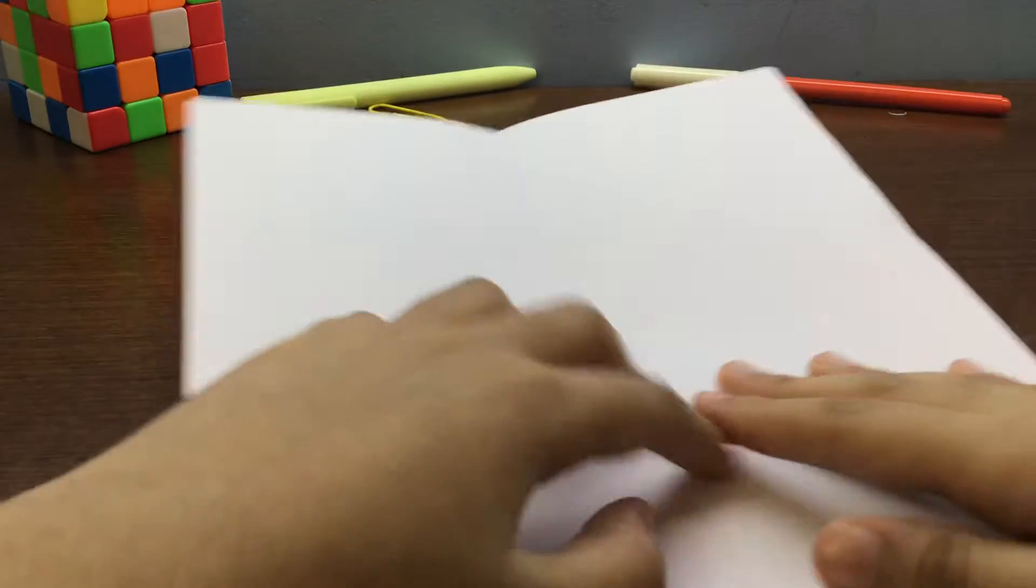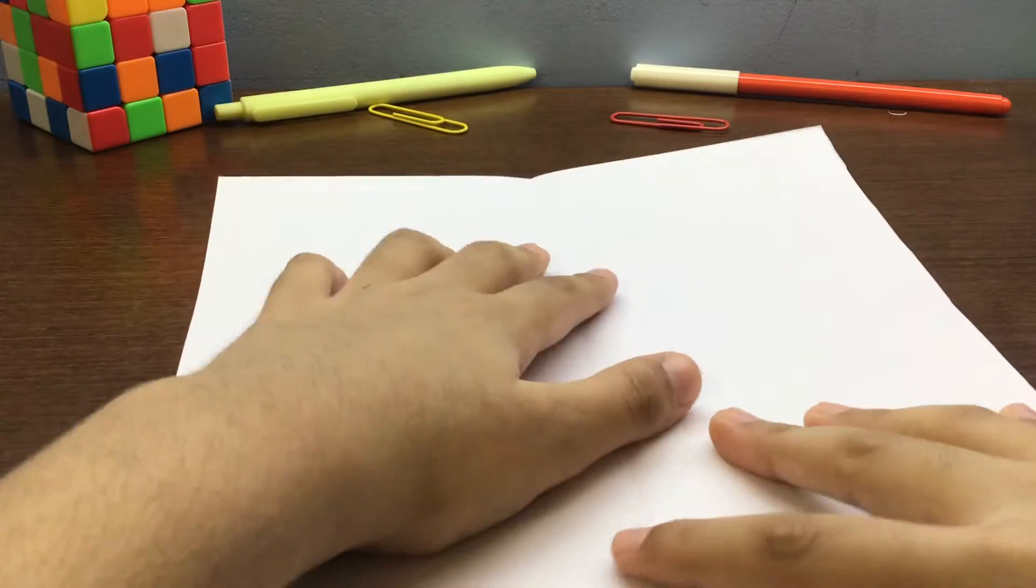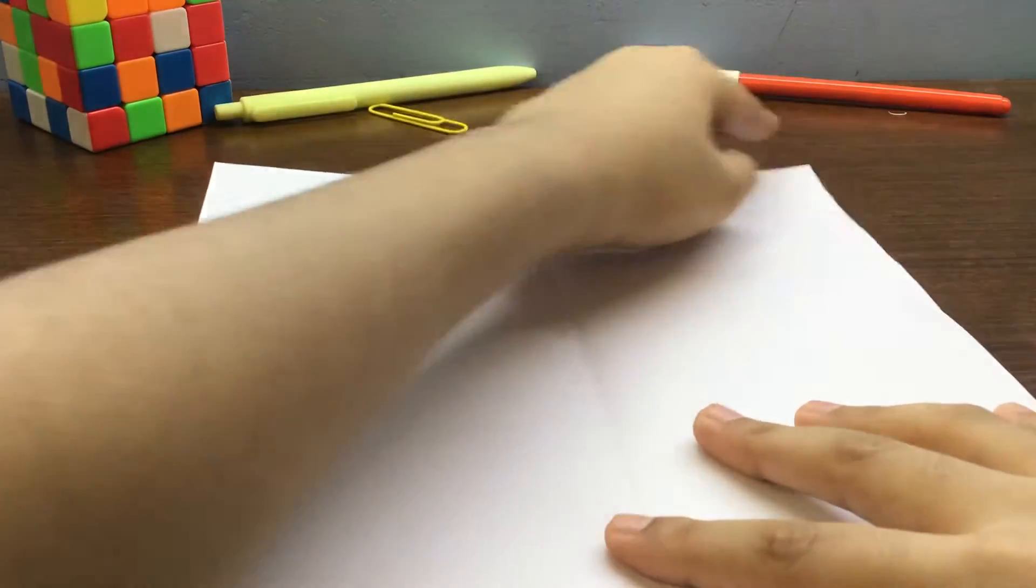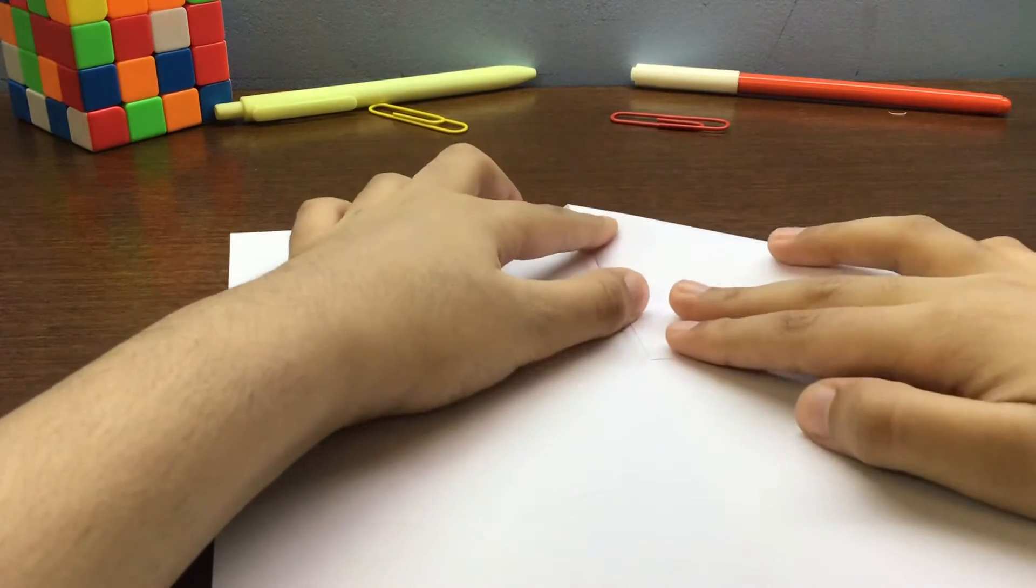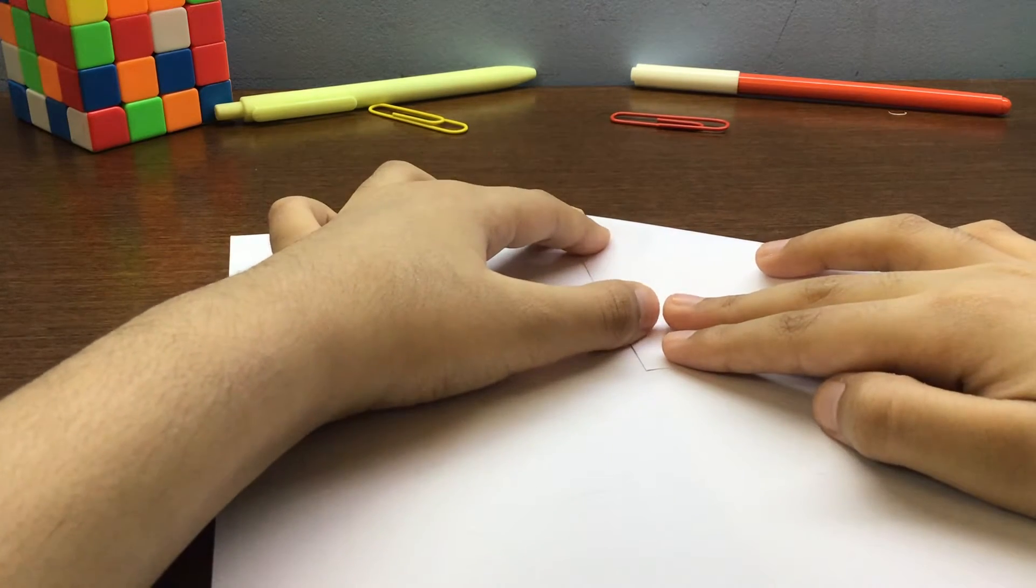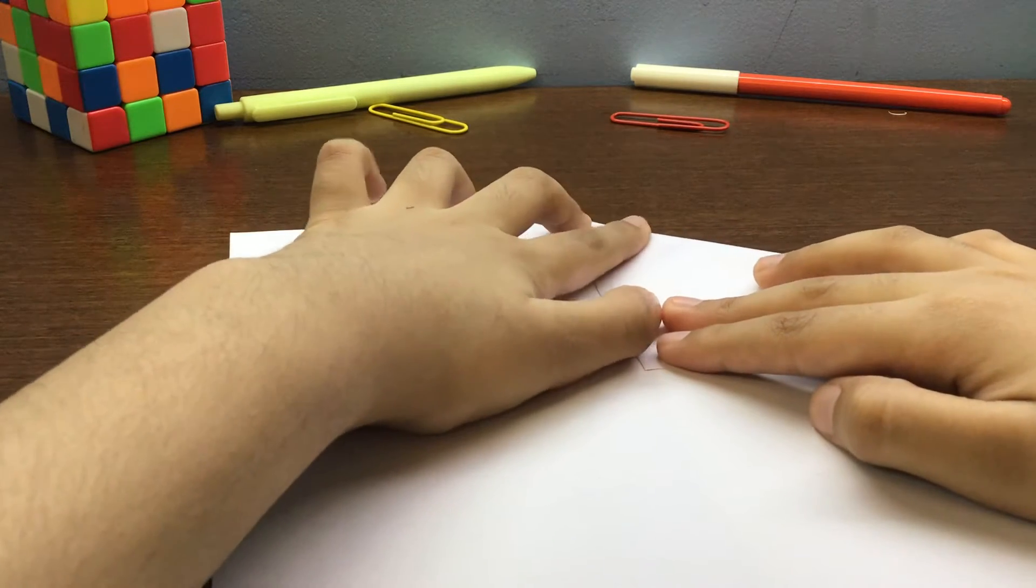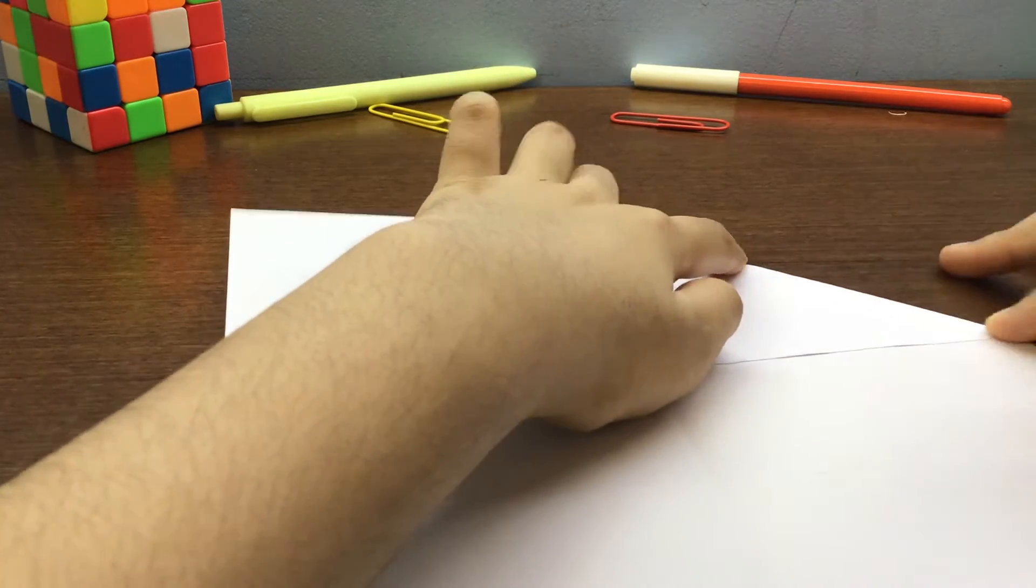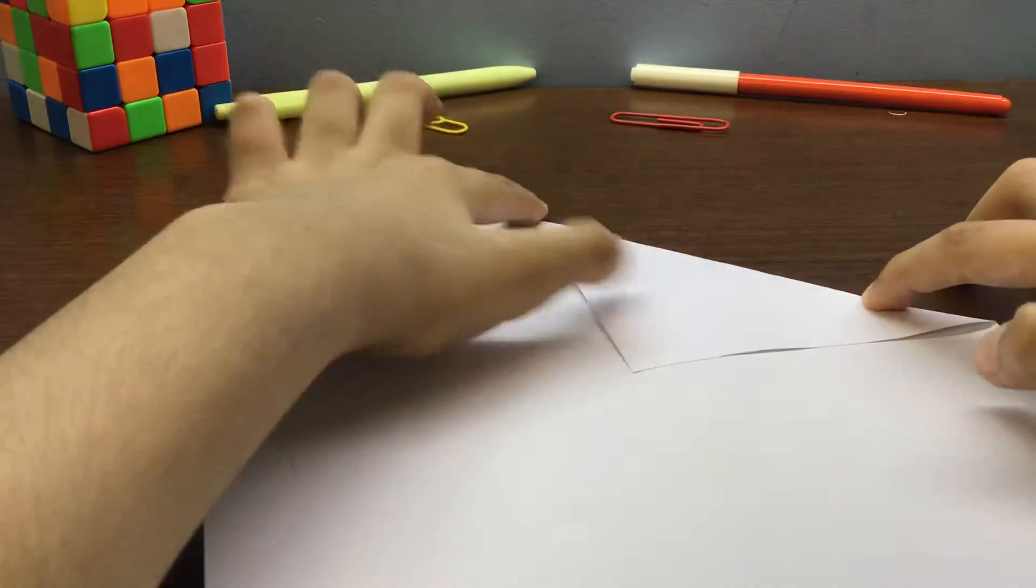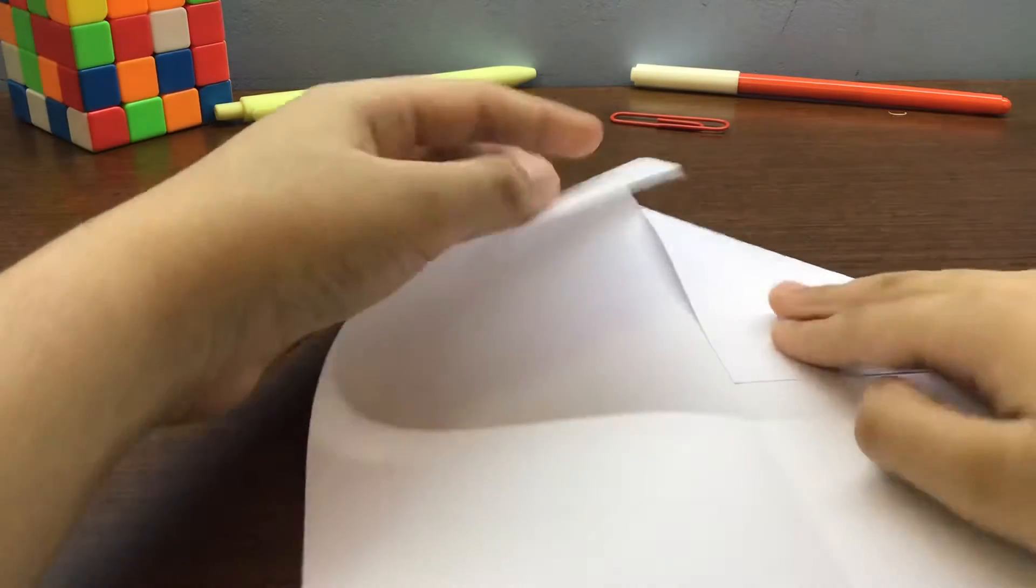Now we will make a fold that will make this edge meet this edge. And repeat the same thing on the other side.